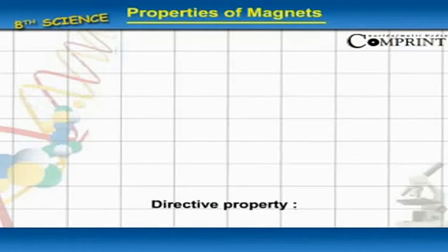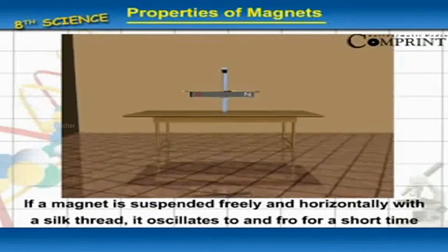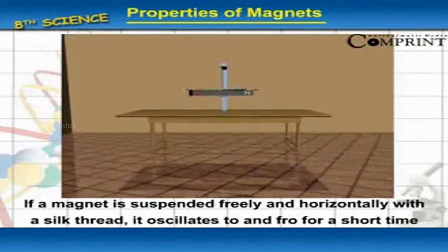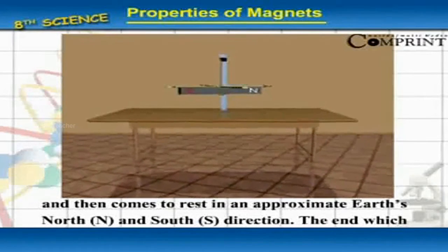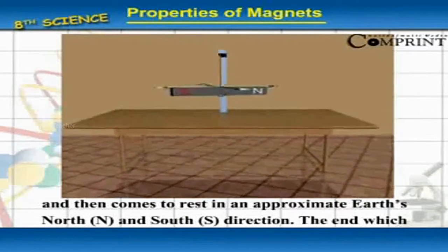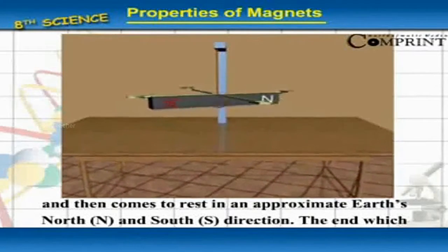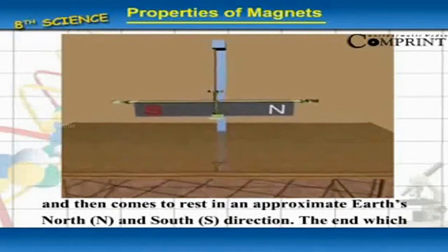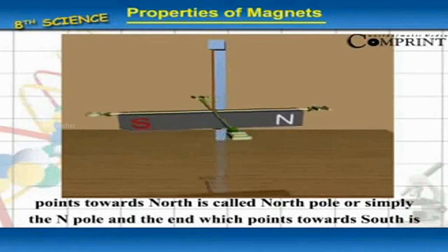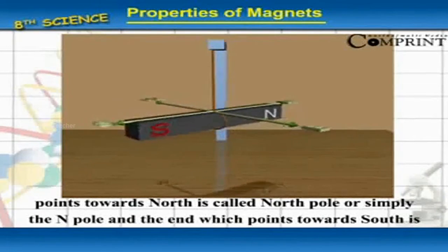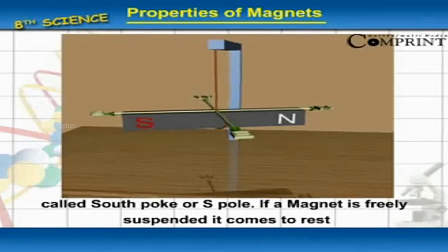Directive Property: If a magnet is suspended freely and horizontally with a silk thread, it oscillates to and fro for a short time and then comes to rest in an approximate north-south direction. See figure 11.3. The end which points towards north is called the north pole or N pole, and the end which points towards south is called the south pole or S pole.